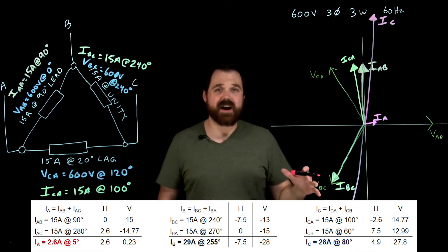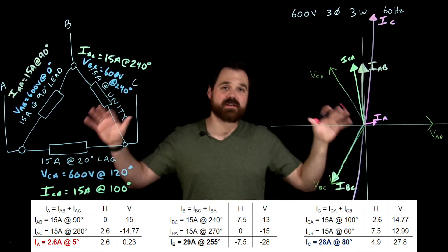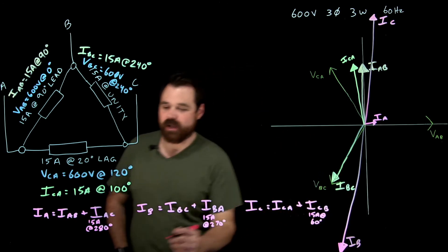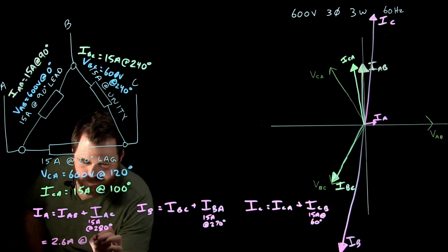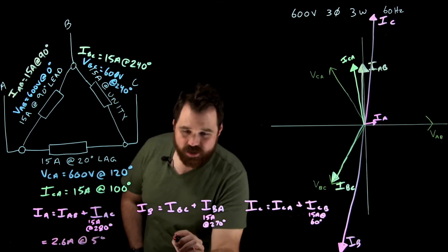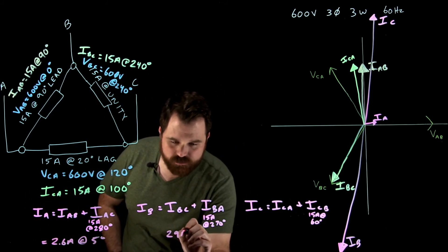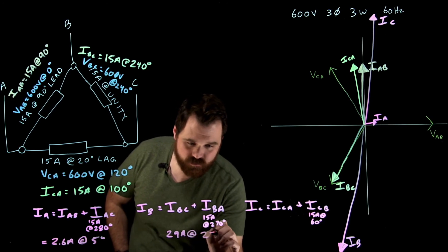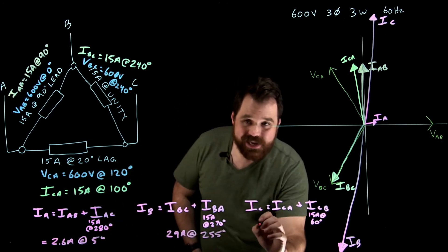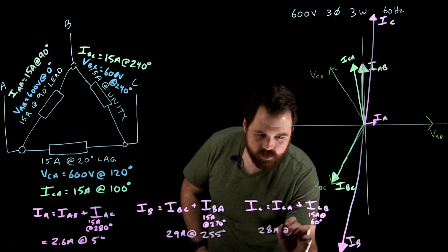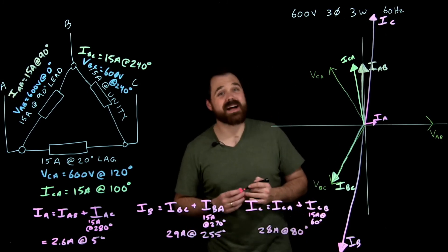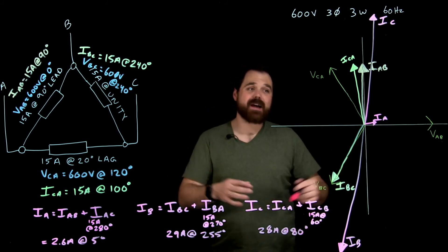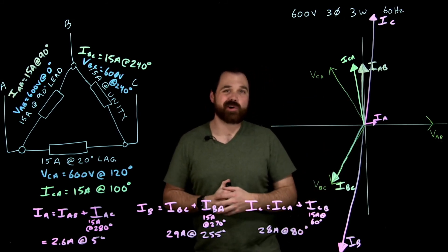So I get those three values from those HV charts. So I got IA was 2.6 amps at five degrees, I got 29 amps at 255 degrees, and I got 28 amps at 80 degrees. So that's how I would do that math and I would solve for those line currents.